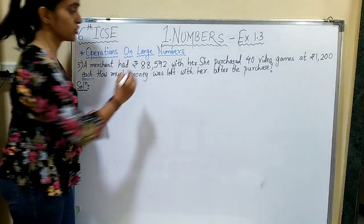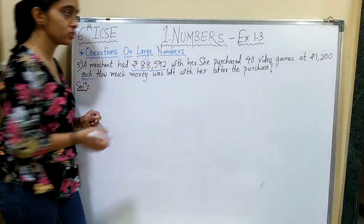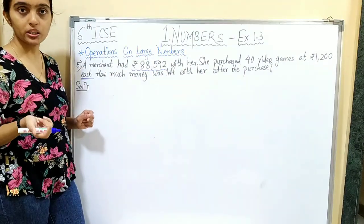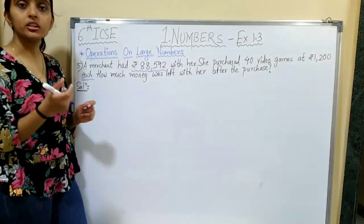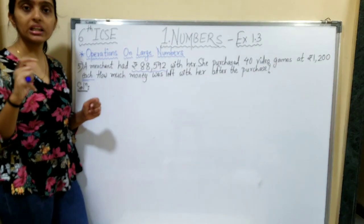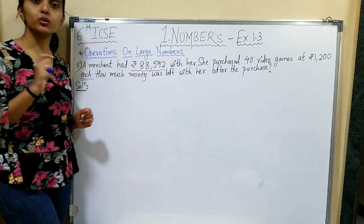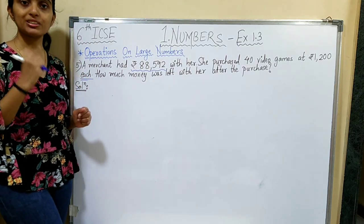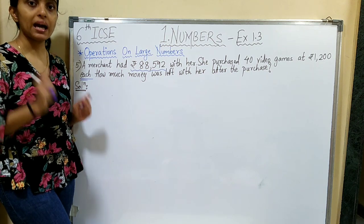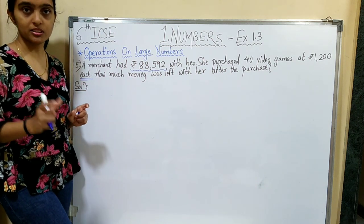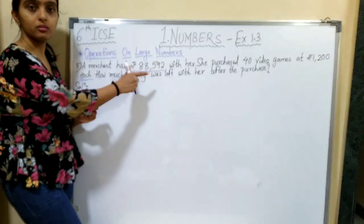The total amount she had in the beginning was Rs. 88,592. She purchased 40 video games at Rs. 1,200 each. First we will calculate the total amount she spent on buying the video games, then subtract that from the total amount she had.